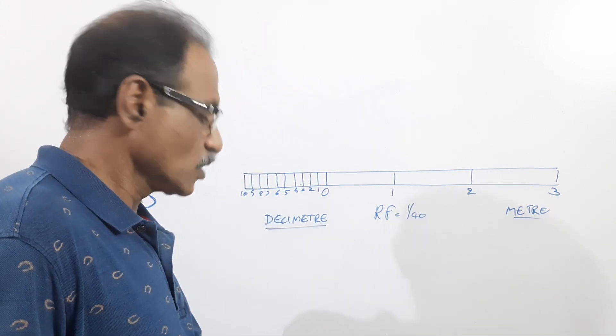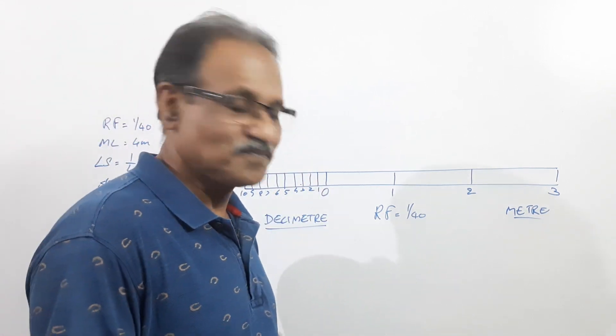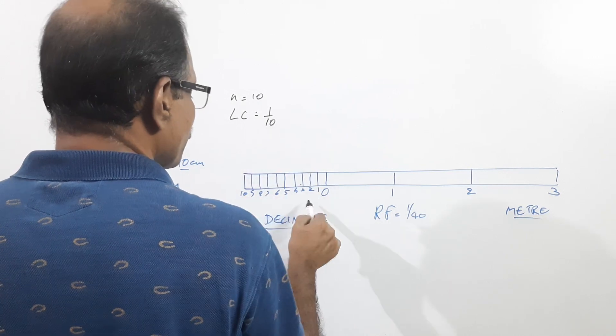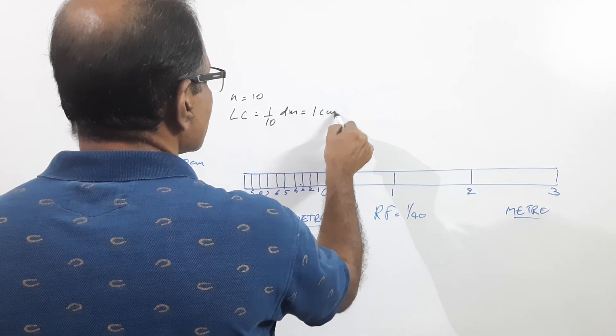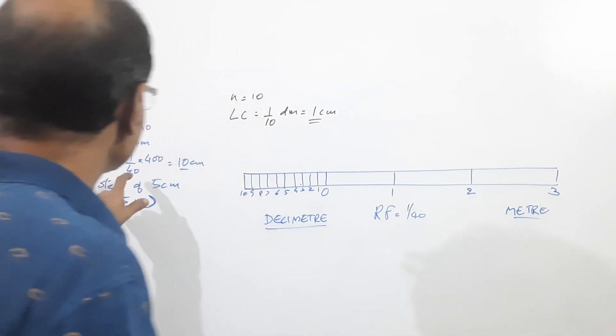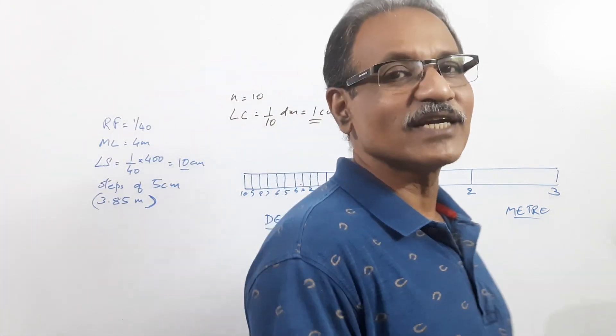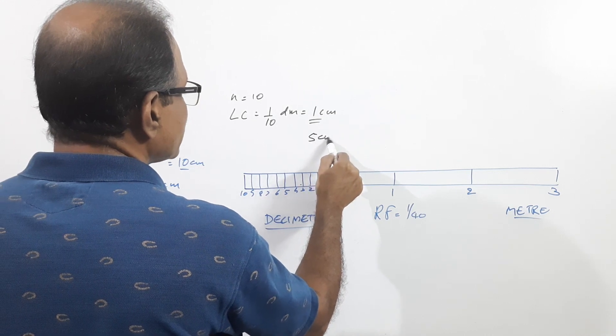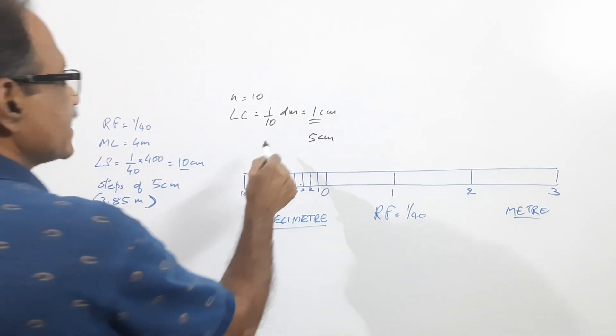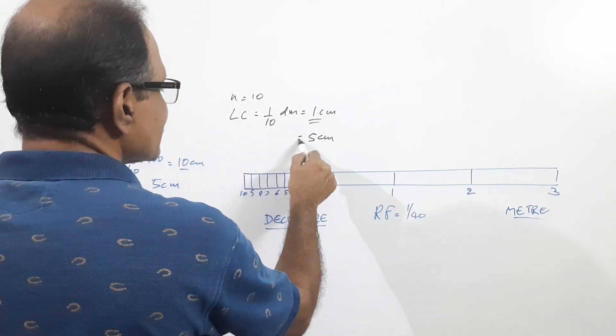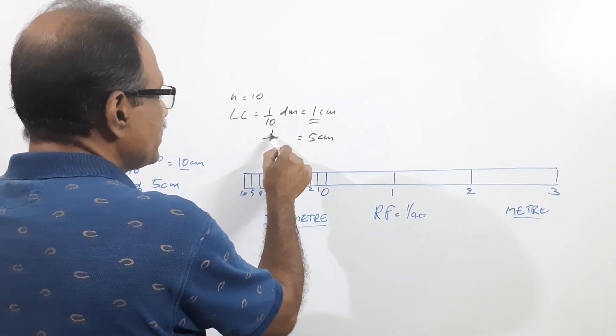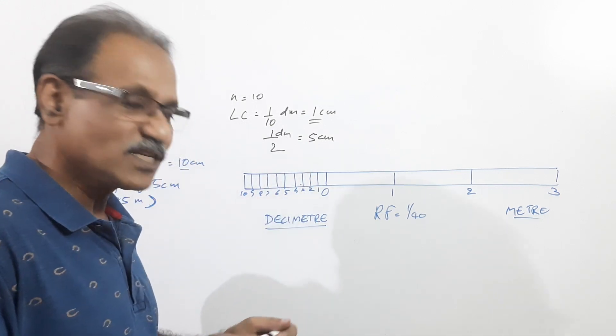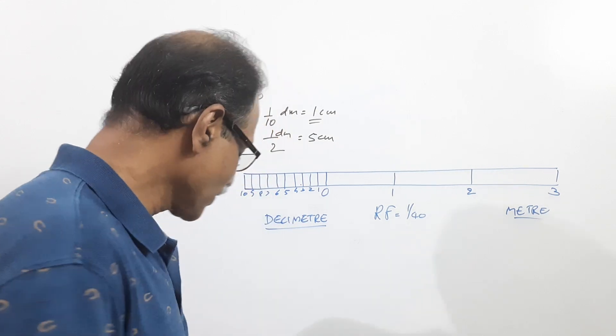Each division is 1 decimeter. Now if you take n equal to 10, least count is 1 by n, that is 1 by 10 of a decimeter, which equals 1 centimeter. But the question says least count is 5 centimeters. What does it mean? 1 decimeter by what gives you 5 centimeters? 5 centimeters is half decimeter, 1 by 2. What does it mean? That n is 2. Very peculiar problem, n is 2.